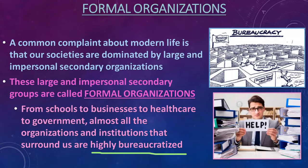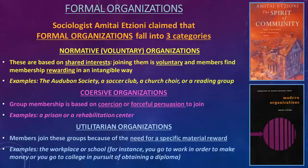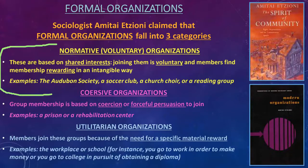You might remember that word from chapter four when we talked about Max Weber. First though, let's look briefly at sociologist Amitai Etzioni, who said that all formal organizations fall into three categories: number one, normative or voluntary organizations; number two, coercive organizations; and number three, utilitarian organizations.